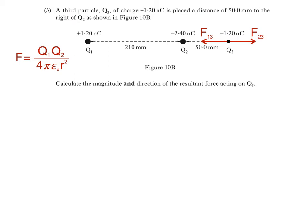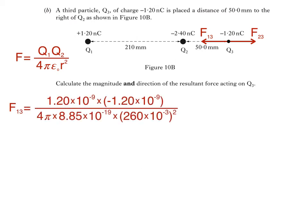To find force F13, we'll substitute our values into the equation. We have our two charges plus 1.2 nC and negative 1.2 nC separated by a distance of 260 mm, as seen in the diagram. This gives an answer of negative 1.92 times 10 to the negative 7 N to the left.